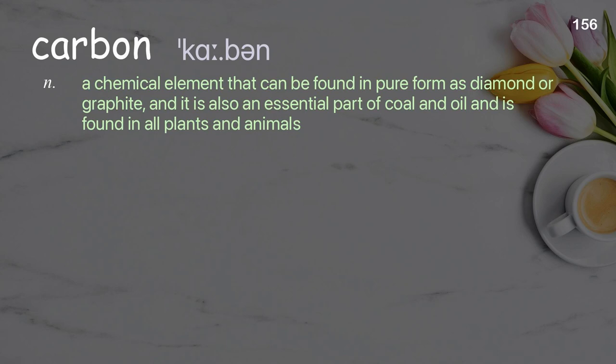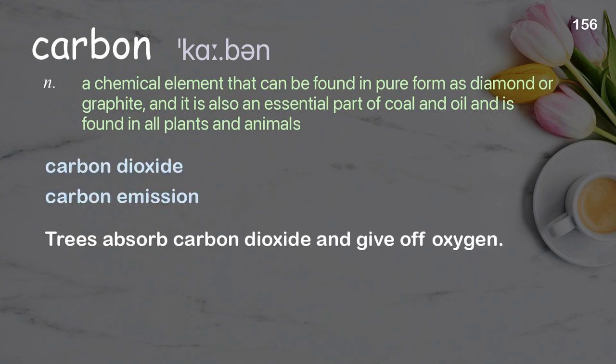Carbon: a chemical element that can be found in pure form as diamond or graphite, and is also an essential part of coal and oil, and is found in all plants and animals. Examples: carbon dioxide; carbon emission. Trees absorb carbon dioxide and give off oxygen.